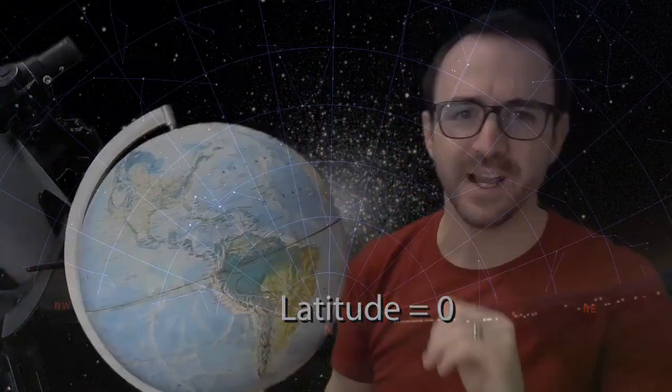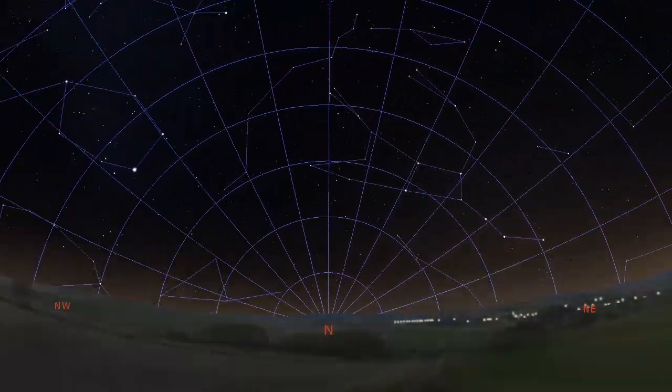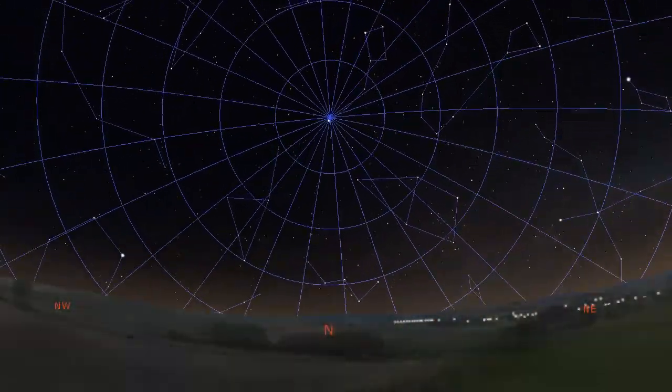And if you're standing here on the equator at zero degrees latitude, the north star is near the horizon and none of the sky is circumpolar. But let's say you're in San Francisco right here at about 37 degrees latitude, then the 37 degrees surrounding the north star is circumpolar.